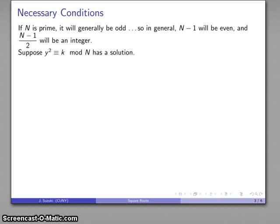Let's think about that. Suppose a square root exists. Suppose that y squared congruent to k mod n actually has a solution.